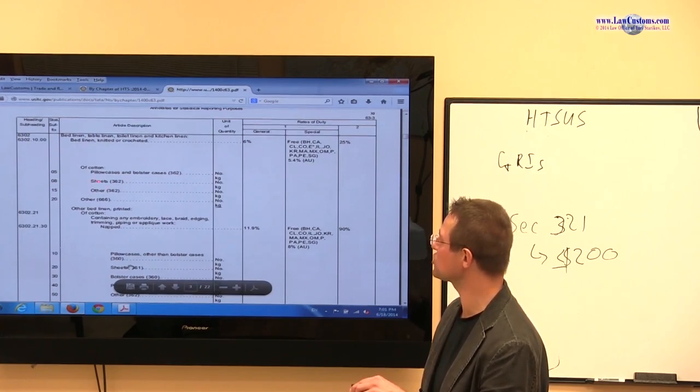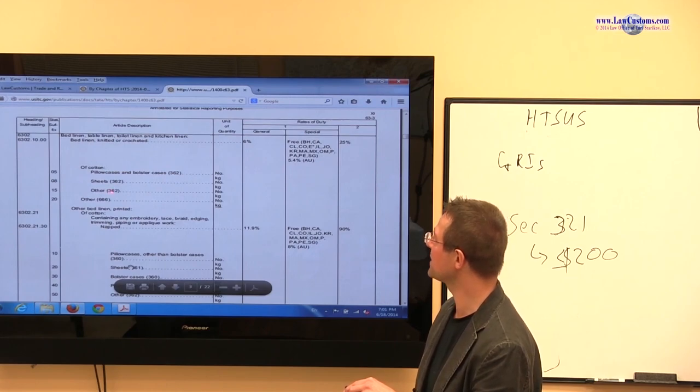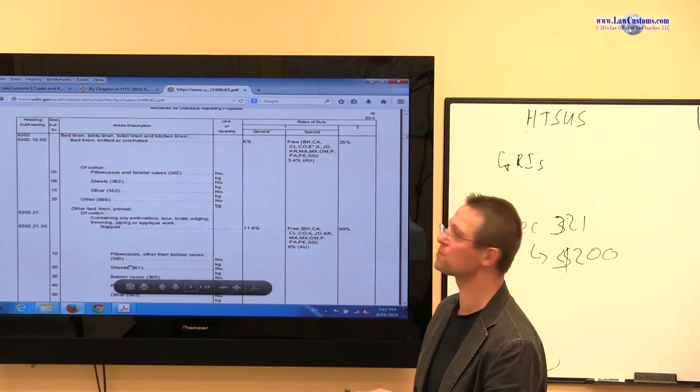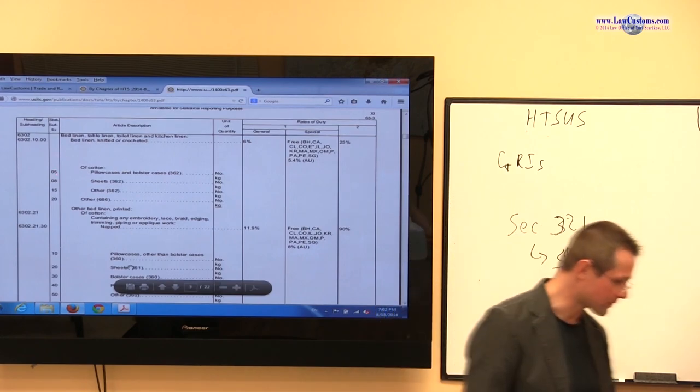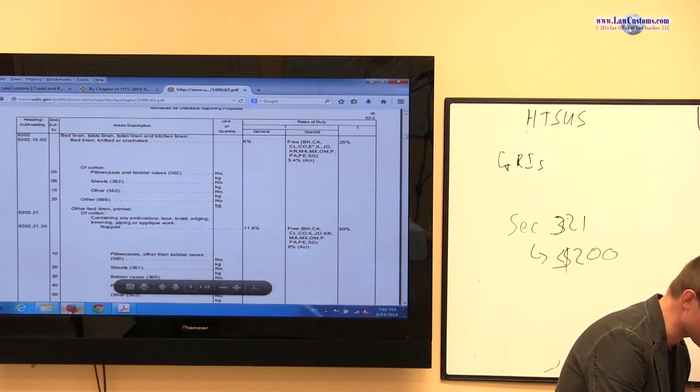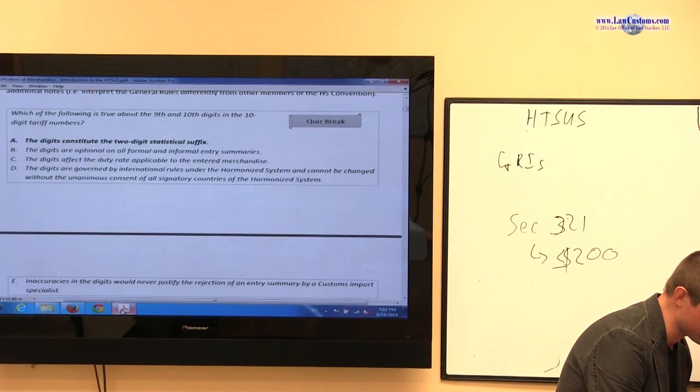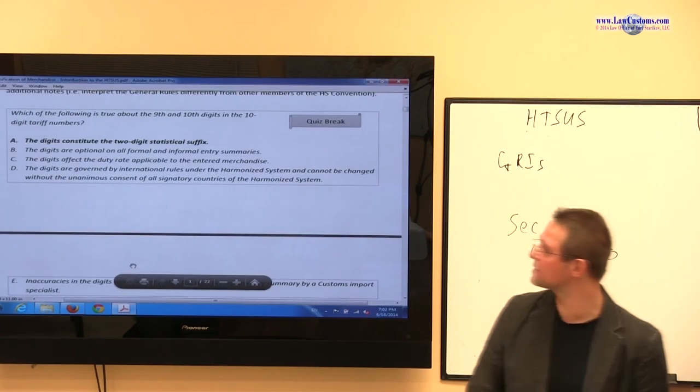Irrespective, it's a pillowcase, sheets, or other. Most important, it's a bed linen. It's knitted or crocheted and made out of cotton, for example.